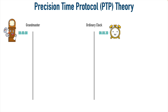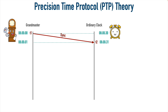Periodically the Grand Master Clock sends out sync messages. Let's say it sends a sync message at exactly 8 o'clock and 0 seconds. When that sync message arrives at the ordinary clock, the ordinary clock records the arrival time as 8 o'clock and 31 seconds — that value is assigned to T2. T1 is the time according to the Grand Master that the sync message was sent. Rather than embedding T1 in the sync message (a one-step sync), Cisco gear typically uses a two-step sync: it follows up with a follow-up message containing T1. So now the ordinary clock knows there is a 31-second disparity between the Grand Master Clock and itself.